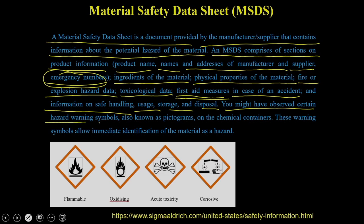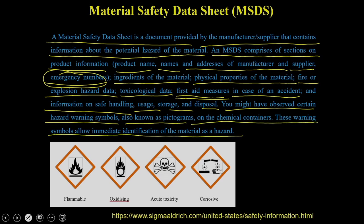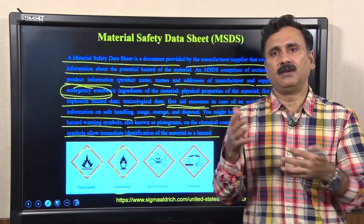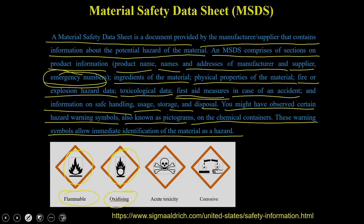You might have observed certain hazard warning symbols, also known as pictograms, on chemical containers. These symbols allow immediate identification of a material as a hazard. For example, a flame symbol means the material is inflammable — it will catch fire very soon, so keep it away from fire when using. A similar symbol indicates an oxidizing material, such as bleach, which can cause injury to your skin. Another symbol indicates a very toxic material — a poison or life-threatening substance — meaning its LD50 is very low.